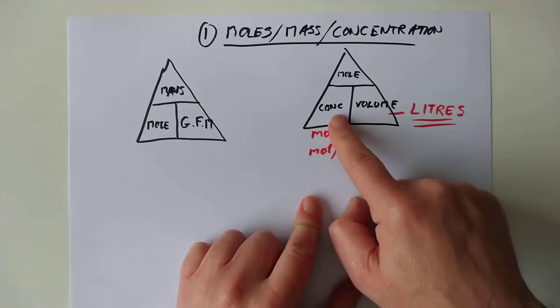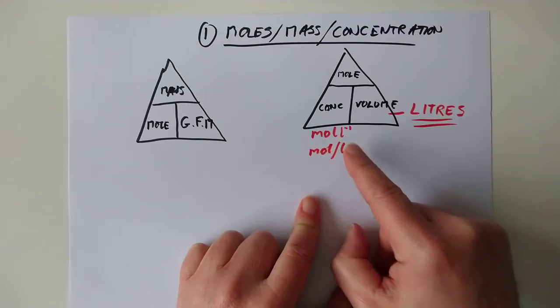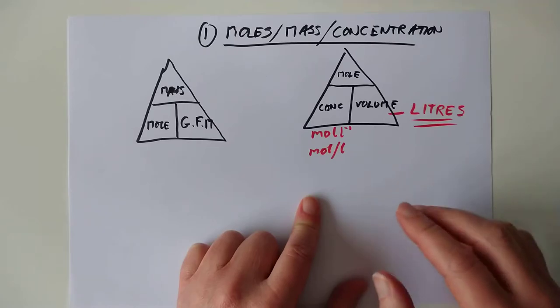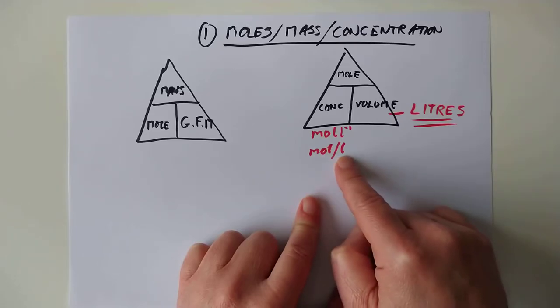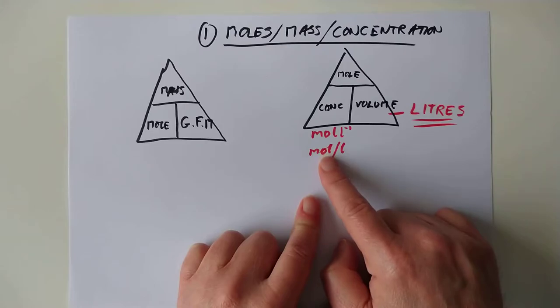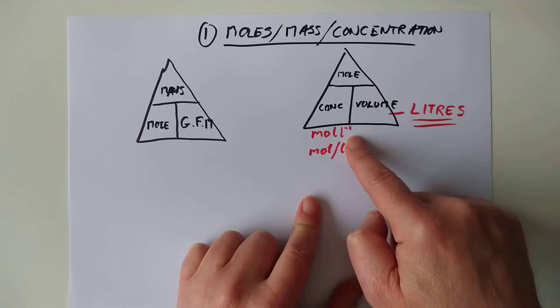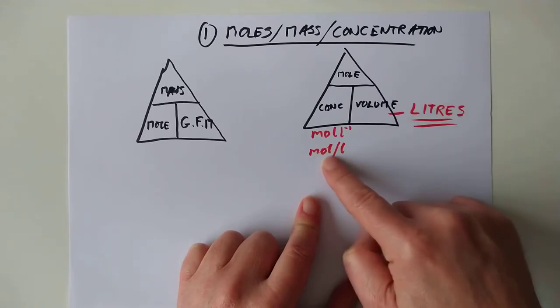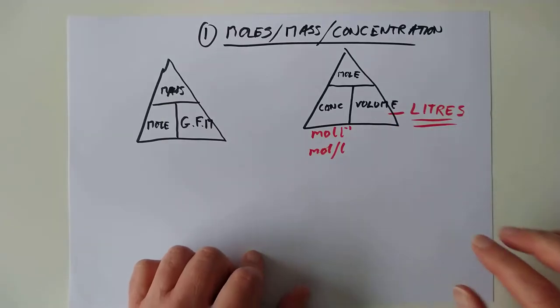Over here, concentration is in moles per litre, which in the physics department and modern notation is mol L to the minus 1. Because I'm a bit of an old fart, I sometimes tend to flip to this notation here, which is moles slash litres. Both are currently acceptable to chemistry. Litres. It's got to be in litres for the volume, otherwise your calculations get completely screwed up.